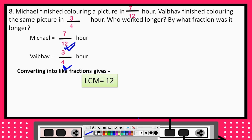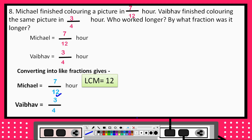Michael's fraction already has a denominator of 12. Vago's fraction does not have 12 as the denominator, so we will make it 12. We multiply 4 by 3 to get 12, and we multiply the numerator 3 by 3 as well, so 3 times 3 is 9. This gives us 9 upon 12. Now we have two fractions with the same denominator: Michael's is 7 upon 12 and Vago's is 9 upon 12.